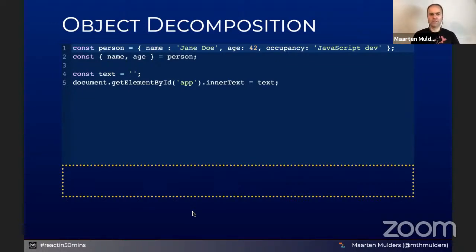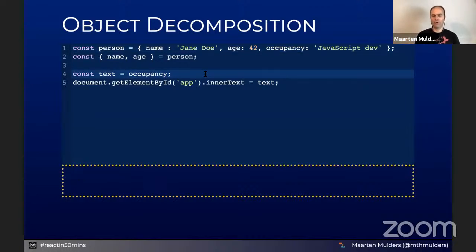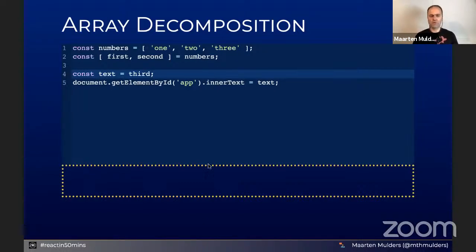Another thing we often use inside React is object decomposition. We create an object, assign it a few properties, and then decompose that object into local variables. We can then use those variables as if they were just there. The name of the variable must match the property inside the object. If we don't declare a property, it won't be present. The same works for arrays — we can use array decomposition to get the first or second element. If the third one isn't decomposed, there's no local variable with that name, so we don't see any output.